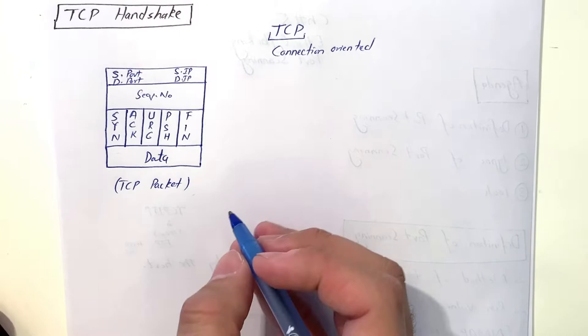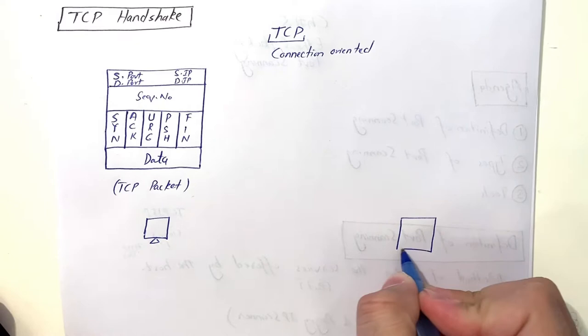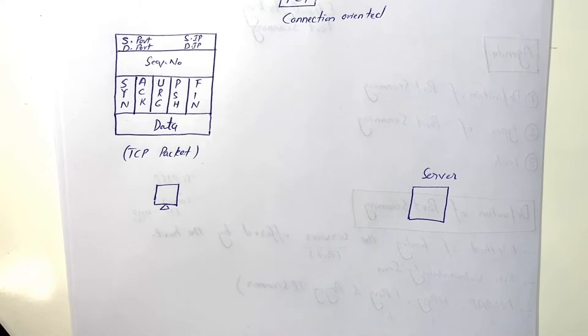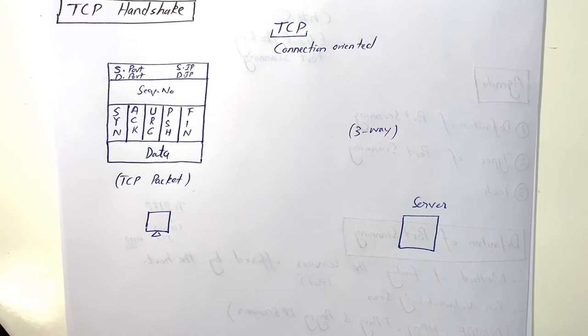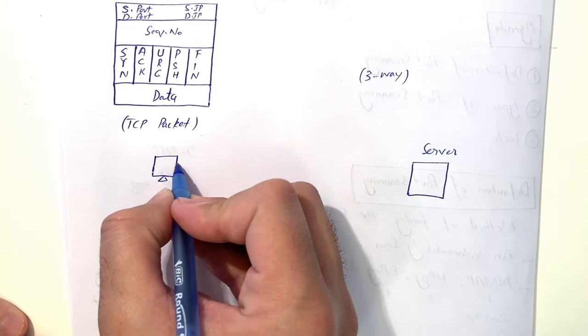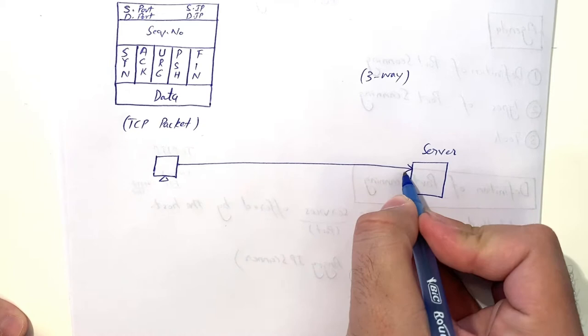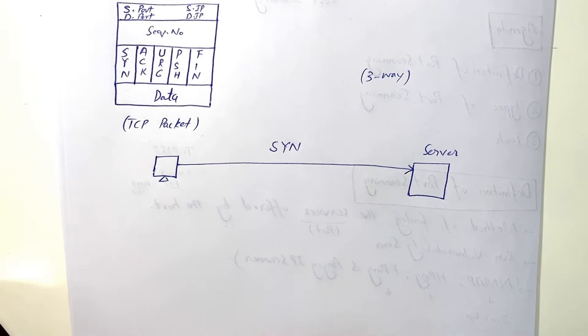In a TCP connection, before communication starts, a three-way handshake occurs. Let's say this is the client and this is the server. First, the client wants to establish a connection, so it will send a packet with only the SYN flag on to the server.